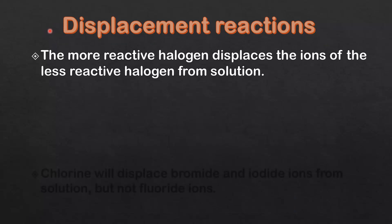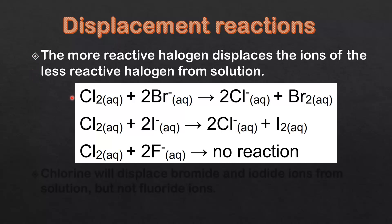Next we look at the displacement reactions of the halogens. The more reactive halogen displaces the ions of the less reactive halogen from solution. In the first reaction, chlorine is displacing the bromide ions from solution and the chloride ions are going into solution. In the second reaction, chlorine is displacing the iodide ions from solution. The first two reactions occur because chlorine is more reactive than bromine and iodine, so chlorine is able to displace the ions of the less reactive halogen from solution.